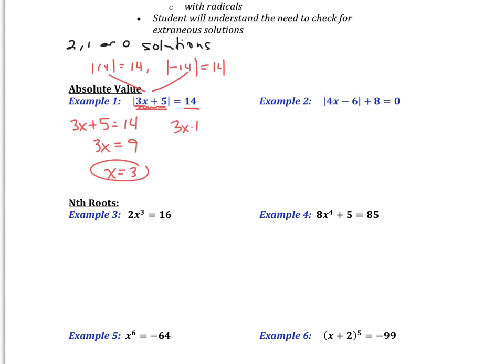Now I'm going to take 3x plus 5 and set it equal to negative 14. I'm going to subtract 5 and get 3x equal to negative 19, divide by 3, and x is equal to negative 19 thirds. A couple things to keep in mind: do not put absolute value symbols when you're creating equations. Absolute value can't equal a negative number, so write the two equations without the absolute value symbol. You always want to check your answers, because when you take the absolute value it always has to equal a positive answer — if it doesn't equal the other side, it's not a solution.